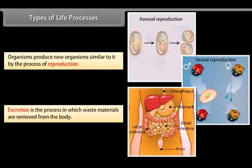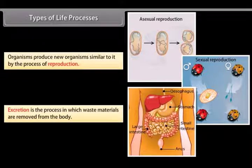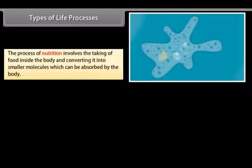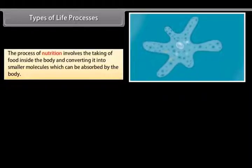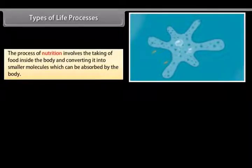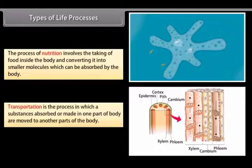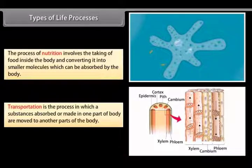Excretion is the process in which waste materials are removed from the body. The process of nutrition involves the taking of food inside the body and converting it into smaller molecules which can be absorbed by the body. Transportation is the process in which substances absorbed or made in one part of body are moved to another parts of the body.